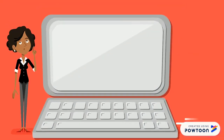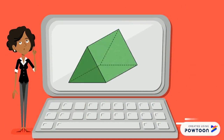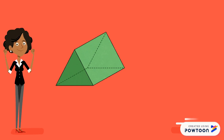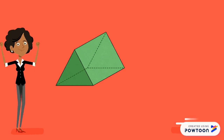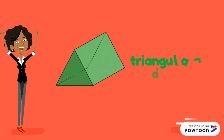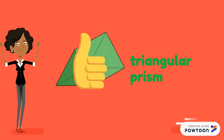Let's try one more. What is the name of this 3D shape? This one was a little trickier. This is called a triangular prism. Well done if you got that one right.